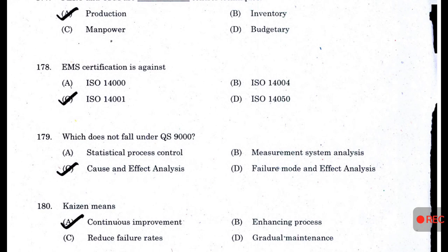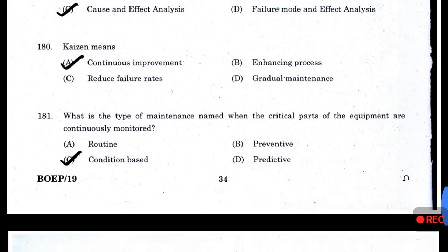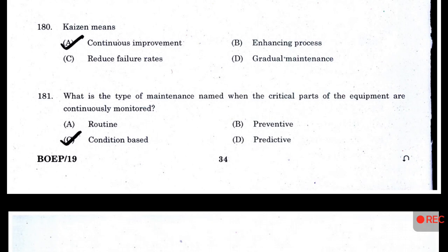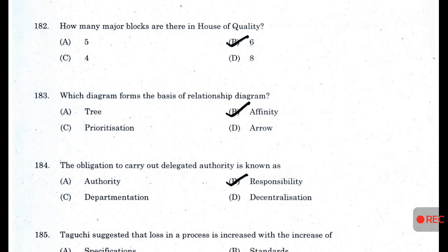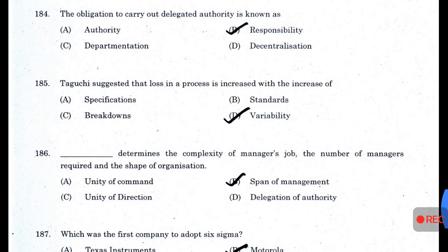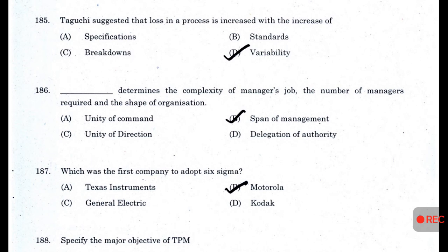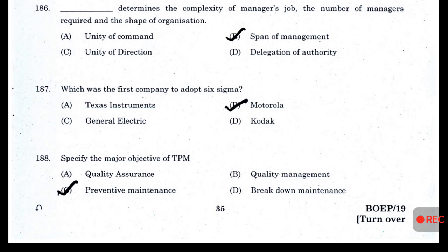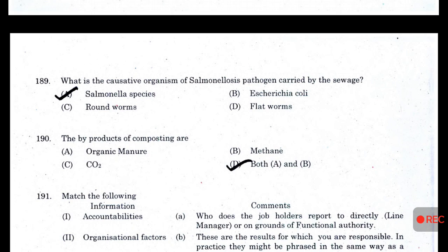EMS certification is against ISO 14001. Which does not fall under QS9000? — Cause and effect analysis. Kaizen means continuous improvement. What type of maintenance is it when critical parts of equipment are continuously monitored? — Condition-based maintenance. How many major blocks are there in the house of quality? — 6. Which diagram forms the basis of the relationship/affinity diagram? The obligation to carry out delegated authority is known as responsibility. Taguchi suggested that loss in a process increases with the increase of variability. Span of management determines the complexity of a manager's job and the number of managers required. Which was the first company to adopt Six Sigma? — Motorola. The major objective of TPM is preventive maintenance.